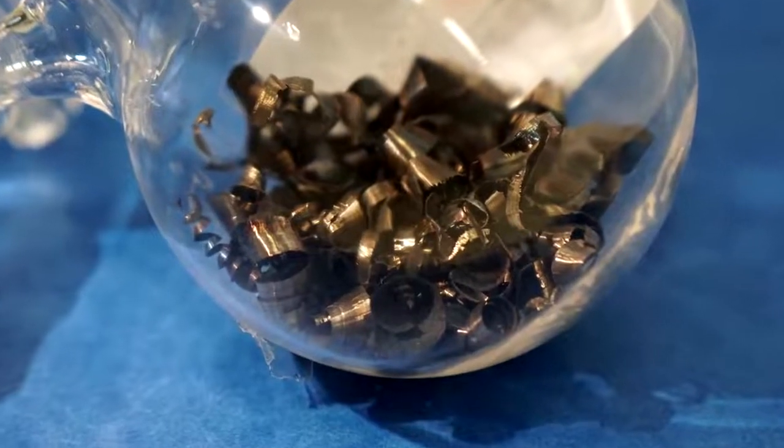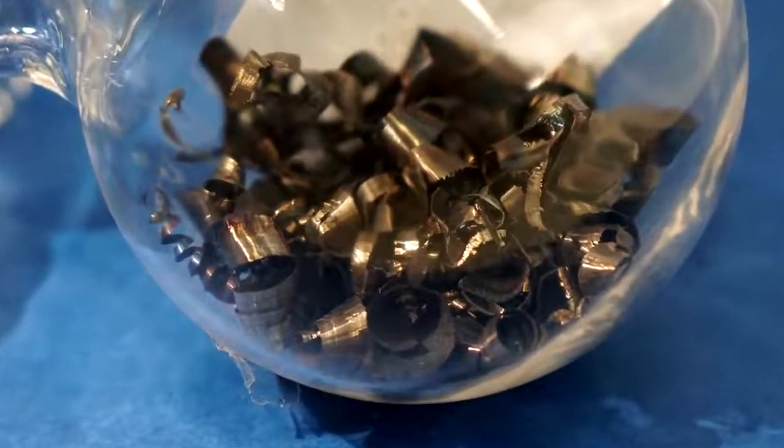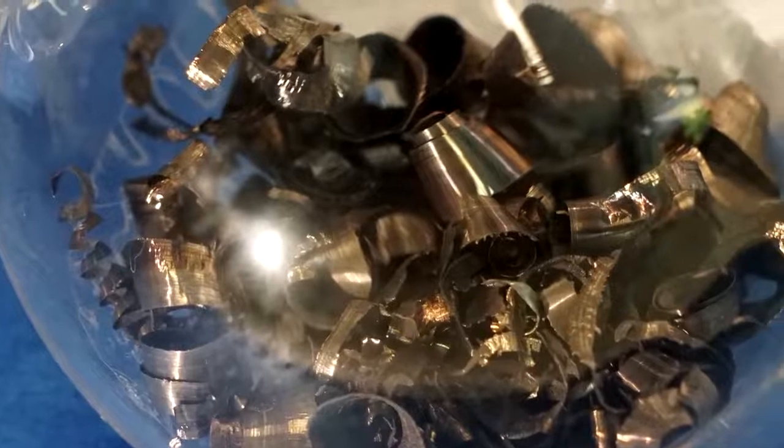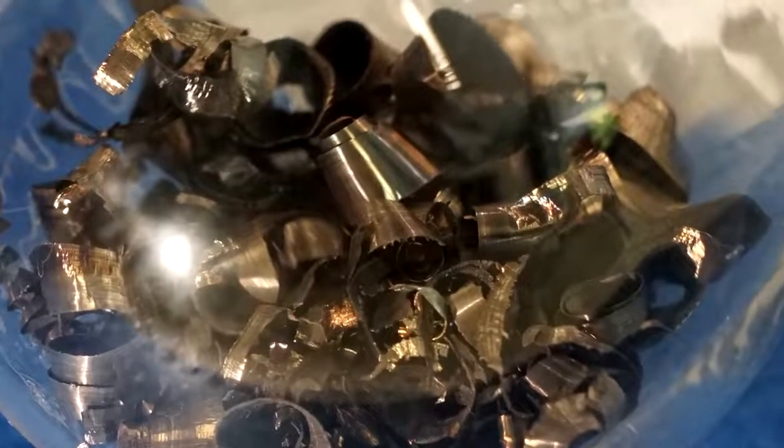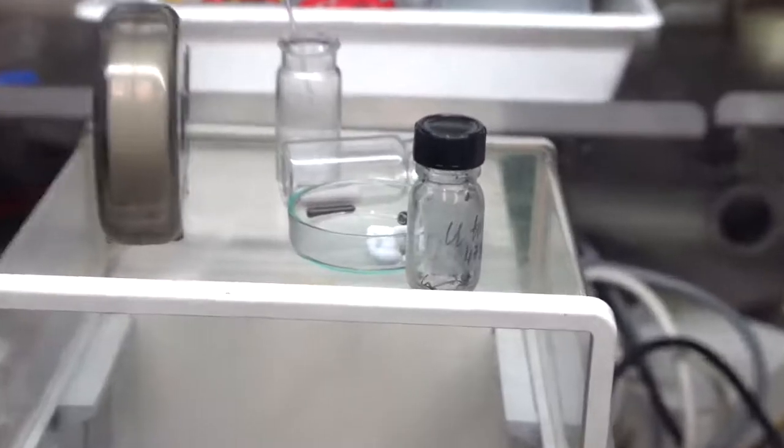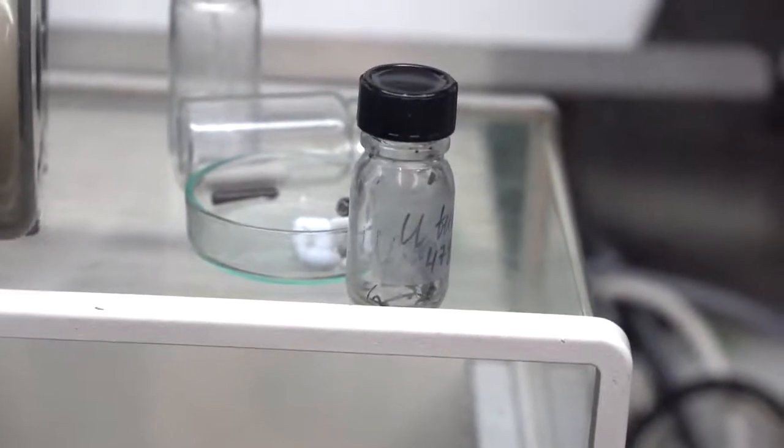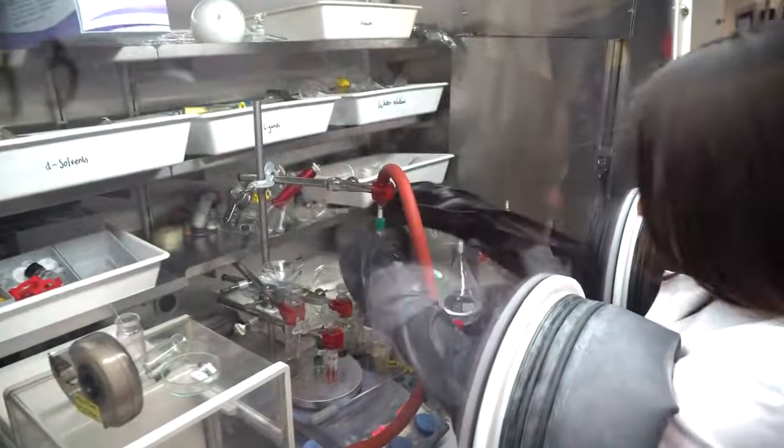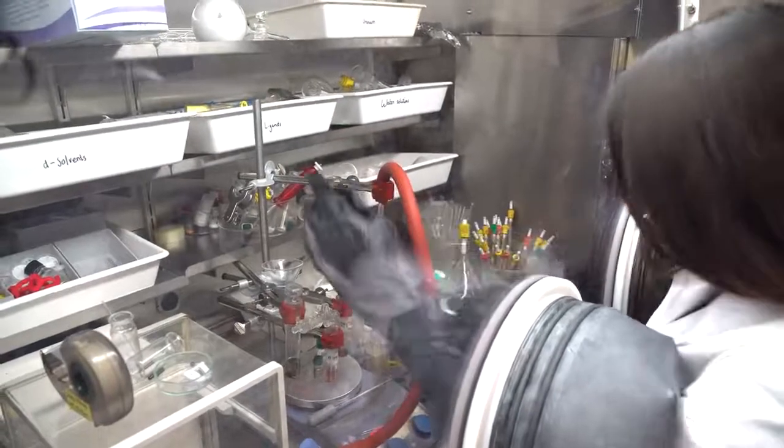Depleted uranium is most frequently used for chemical research in order to reduce scientists' exposure to its radiation. Pure uranium obtained from its ore looks quite dark as its surface oxidizes pretty fast because of the high chemical activity of this metal. That's why it's often stored in argon.